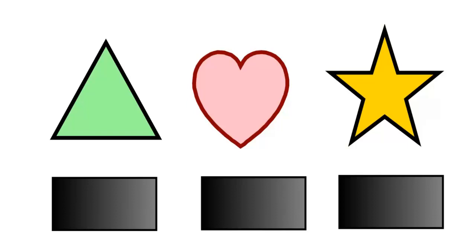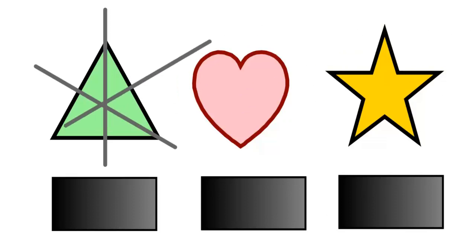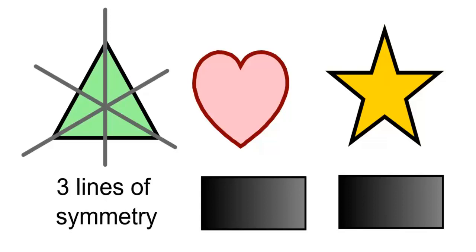In an equilateral triangle, we have 1, 2, and 3 lines of symmetry. Also remember that lines of symmetry have to pass through the center of the shape.